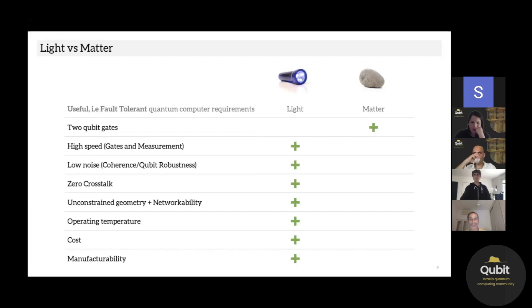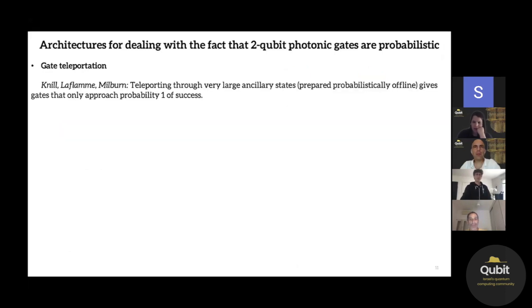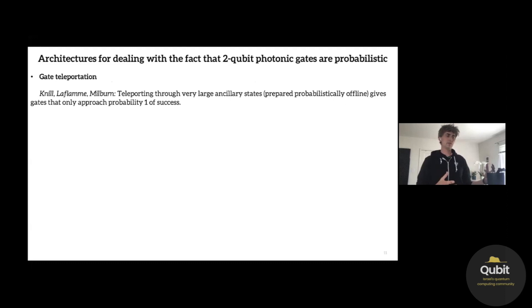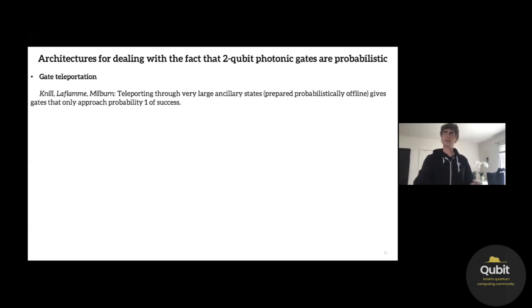So we've got to find a way of doing two-qubit gates. The first breakthrough showing we could use photonics without having photons interact through an intermediary system was KLM — Knill, Laflamme, and Milburn showed that using linear optics and measurement you can prepare large offline photonic states and teleport through them to achieve two-qubit gates, approaching unit probability as the ancillary state gets bigger. It was a conceptual breakthrough, though the machine would have been about the size of the Sierra Nevada mountains.